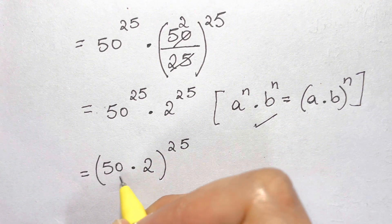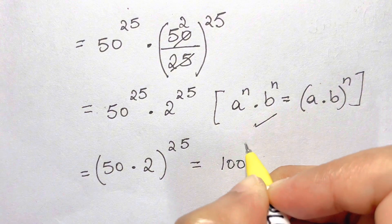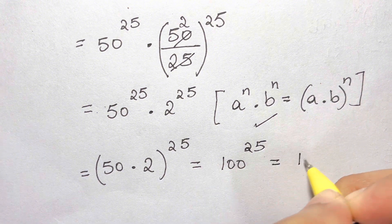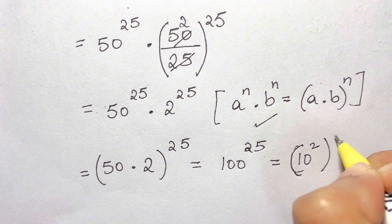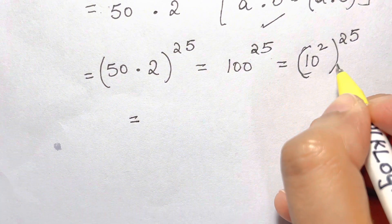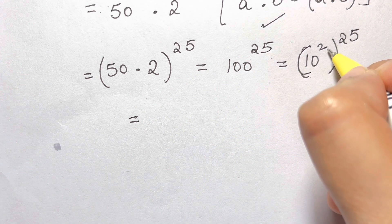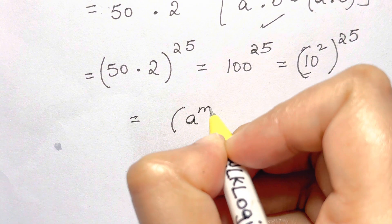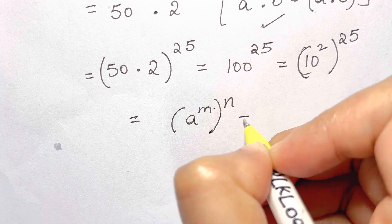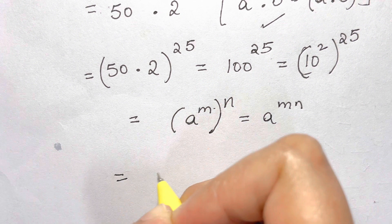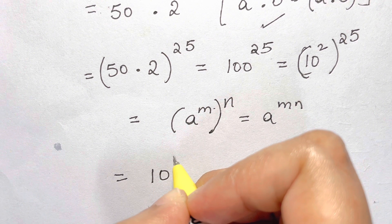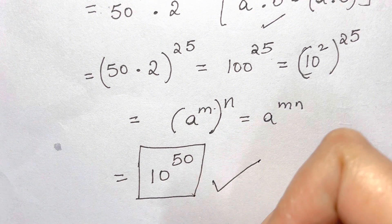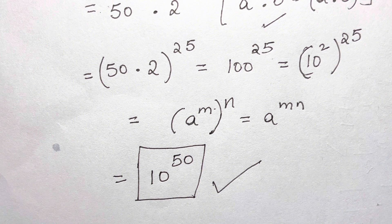50 times 2 is 100, so we have 100^25. Now 100 can be written as 10², so we get (10²)^25. Applying the power-to-power rule — a^m whole to the power of n equals a^(mn) — we multiply 2 by 25 to get 50. So the answer is 10^50. Thanks for watching, bye bye, take care, have fun!